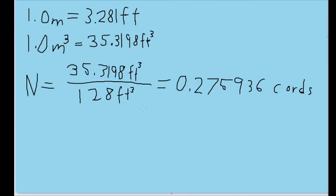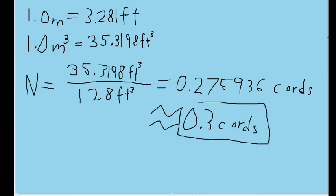So for the purposes of this question, let's just assume that everything is going to be rounded off to a single significant figure. And let's rewrite this as about 0.3 cords. And that will be our true final answer for the number of cords in a cubic meter.